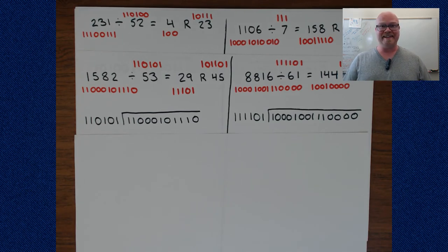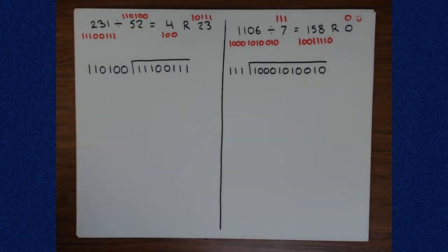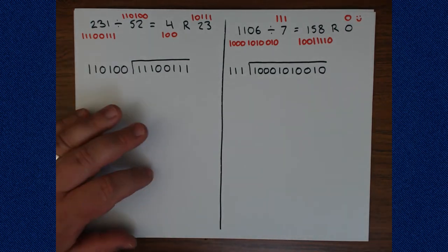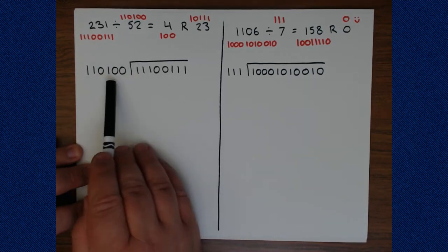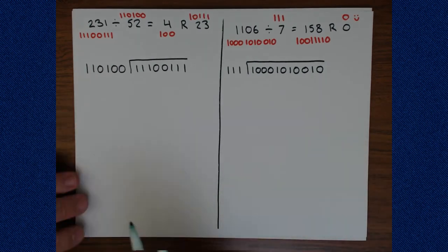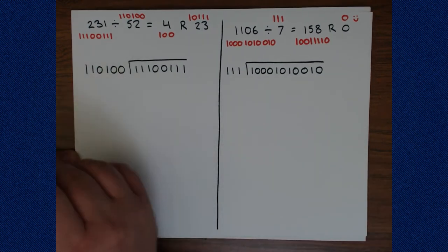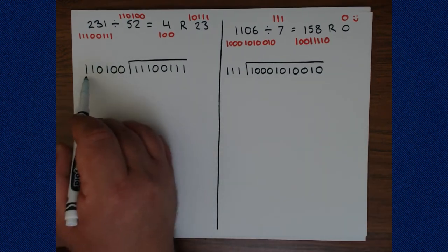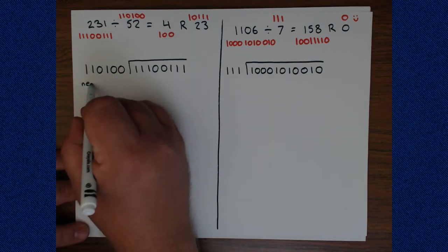Now let's go ahead and see if we can't solve these four division problems quickly. To start, we will look at 231 divided by 52. Here's the binary for 231, and here's the binary for 52. What's going to happen is we are going to need for each of these to know what the negative version of this is.